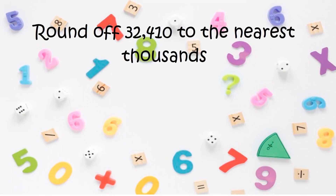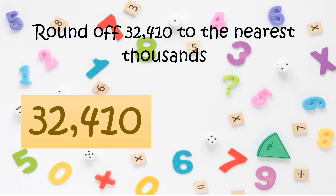Let us have our first example. Round off 32,410 to the nearest thousands. All you have to do is write the numbers, then let's go back to the question — round off 32,410 to the nearest thousands. So follow these steps.